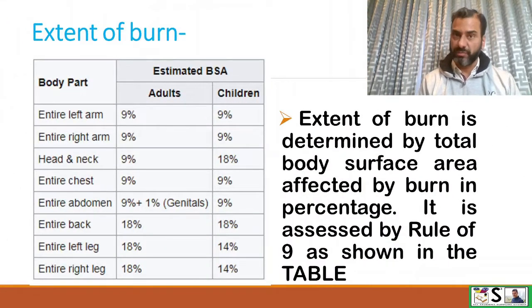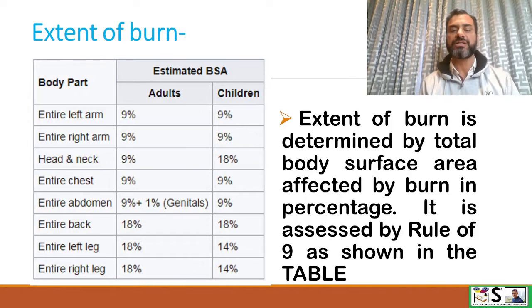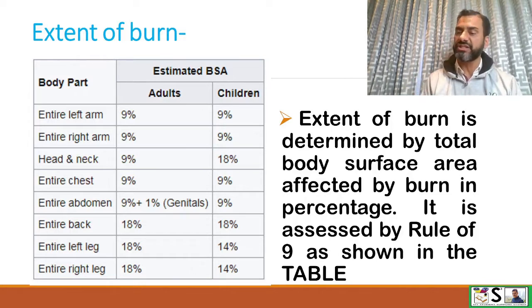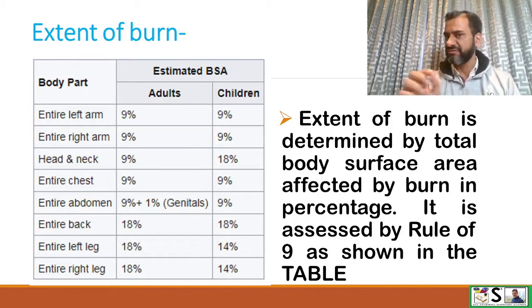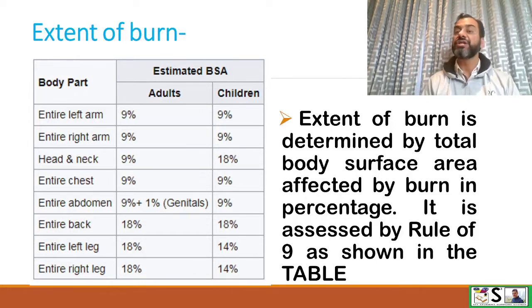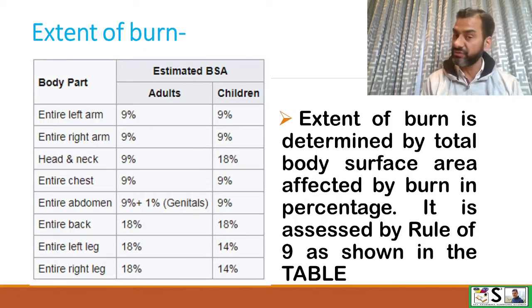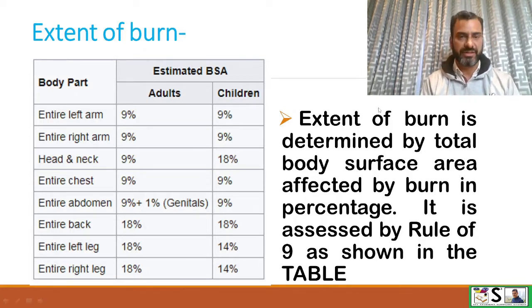Now, extent of burn. Extent of burn is determined by the total body surface area affected by burn, expressed in percentage. It is assessed by the rule of 9, as shown in the table.